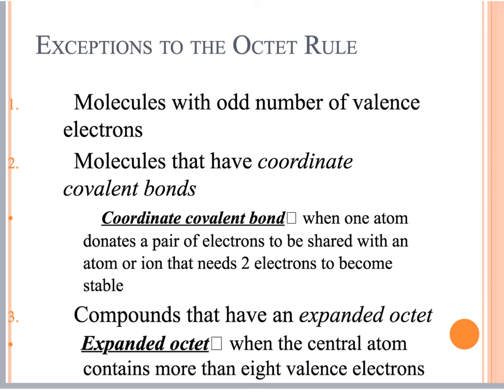There are exceptions to the octet rule. You could have an odd number of valence electrons, which is very uncommon. More common is an expanded octet, where the central atom has more than eight electrons — usually more than four bonds, sometimes five or six bonds attached, or dots on the central atom. Only the central atom will have an expanded octet. When you do the math and the numbers don't line up, that tells you something is unusual — usually an expanded octet. There's also a coordinate covalent bond, where one atom donates a pair of electrons, but we won't encounter that. The main exception you'll see is the expanded octet, and we'll practice it.